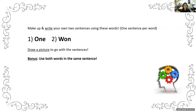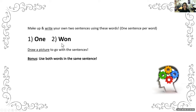Now I'm going to give you specific homophones to practice with. Some of them will get mixed up more than others. I want you to make up and write your own two sentences using these words — one sentence per word — or use both words in the same sentence, and you can draw a picture to go with the sentences. We're going to start with the words one and won — one as in the number, and won as in 'I won a game.'